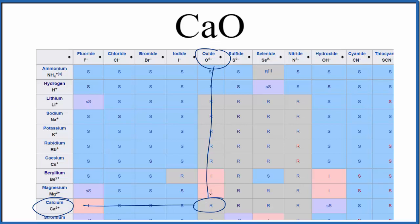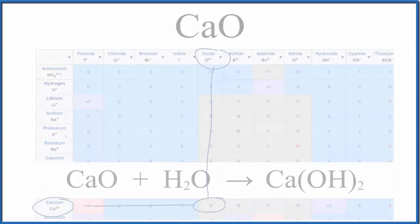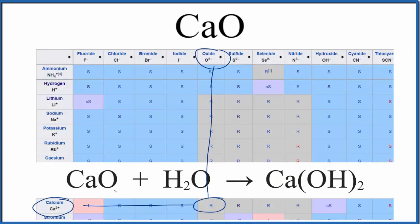That reaction looks like this. We take our solid calcium oxide, we put it in liquid water, it reacts to form calcium hydroxide. So in answer to our question, CaO, calcium oxide, it reacts with water to form a new substance, so we can't really say it's soluble or insoluble.